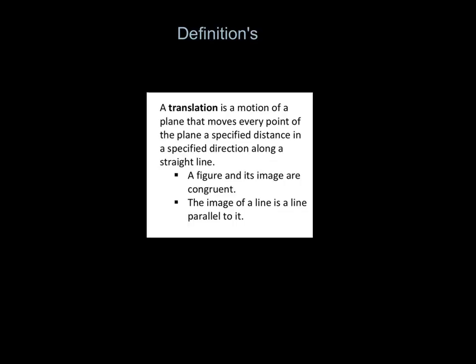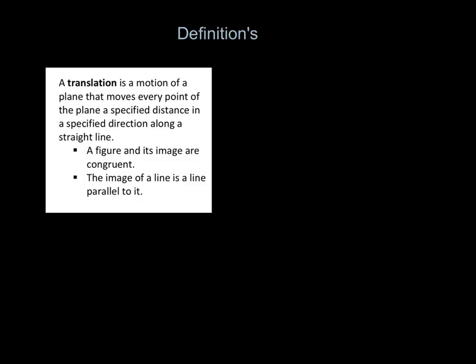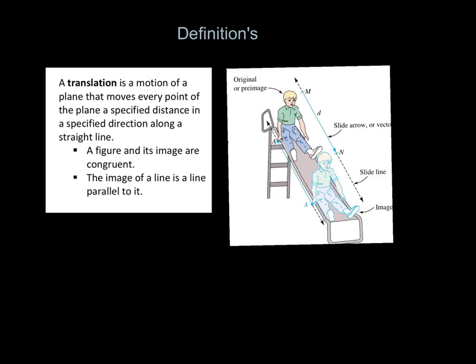A translation is a motion of a plane that moves every point of the plane a specified distance in a specified direction along a straight line. A figure and its image are congruent, and the image of a line is a line parallel to it. Our next definition would be a vector arrow. By looking at this image, you can see...